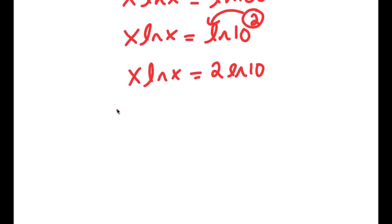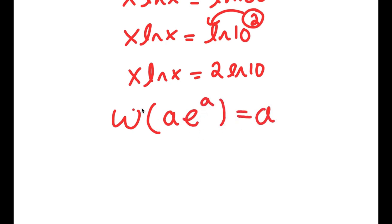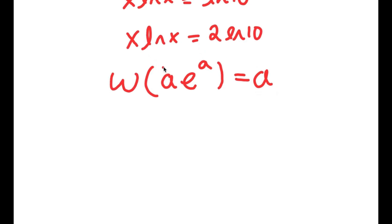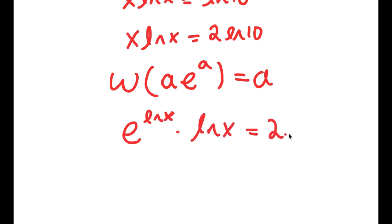Now there's something called the Lambert W function. If I take the Lambert W function of something in the form a times e to the power of a, this is going to equal a. So what I'm going to do is rewrite x here as e to the power of ln x, because the e and ln cancel out and this results in simply x. So I'm rewriting x as e to the power of ln x, and I have this times ln x is equal to 2 times ln 10. This is now in the form a times e to the power of a.